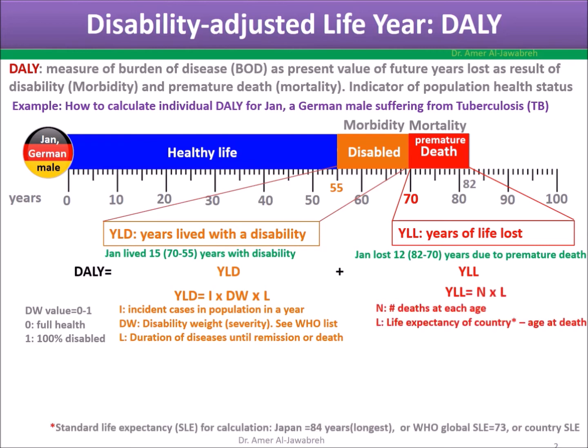YLL = number of deaths at each age, times life expectancy minus age at death. For life expectancy, Japanese life expectancy of 84 can be used as it is the longest, or the WHO global life expectancy of 73.